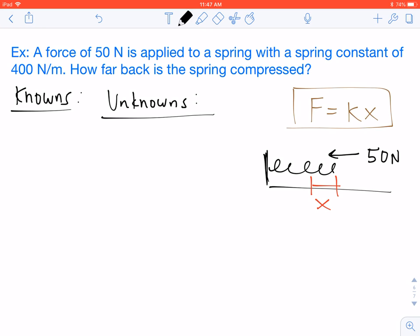And so as we begin, we need to list our knowns and unknowns. So we know that we have a force of 50 newtons. And we also know we have a spring constant of 400 newtons per meter.